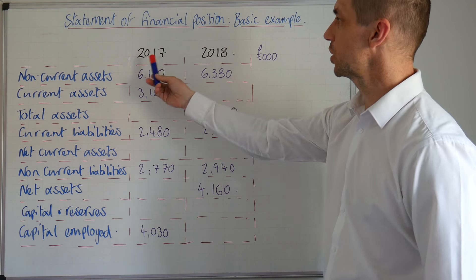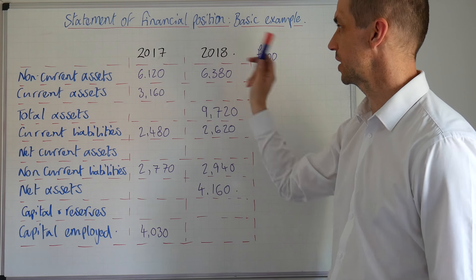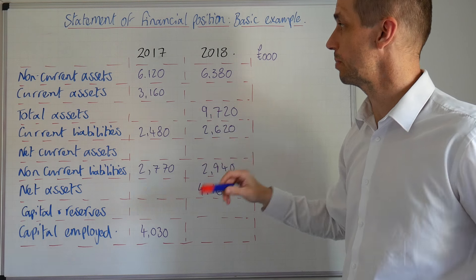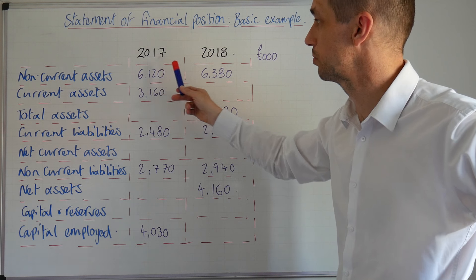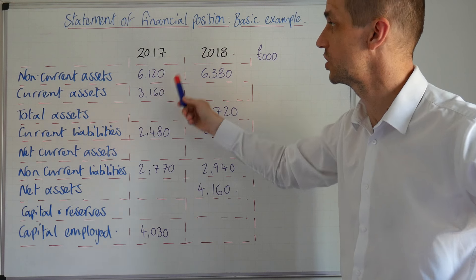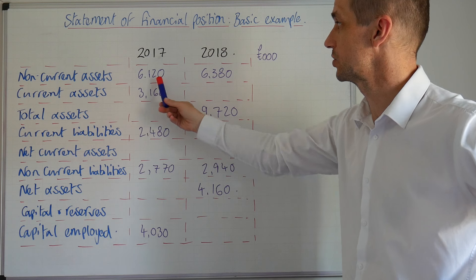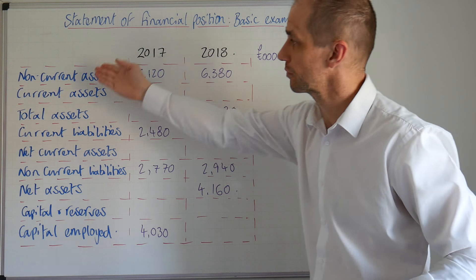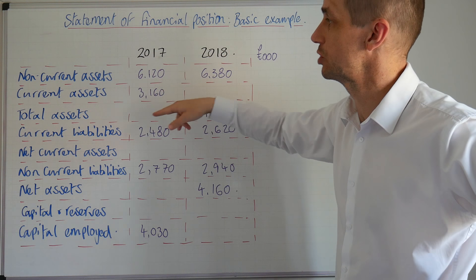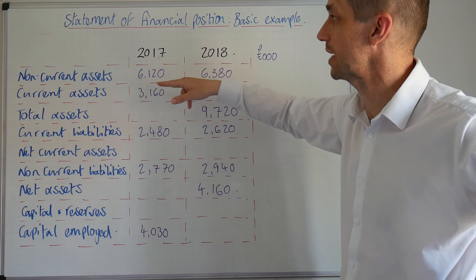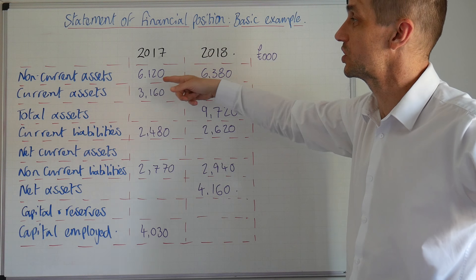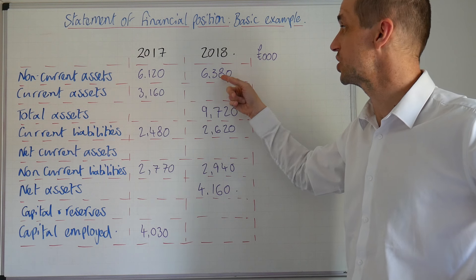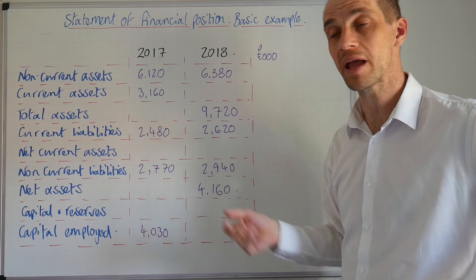We've got two different periods — 2017 and 2018. This is in thousands of pounds, so in effect we've got 6.12 million pounds. Now, as we look at this information, we can see with non-current assets we start at 6.12 million and then we see that rise to 6.38 million.